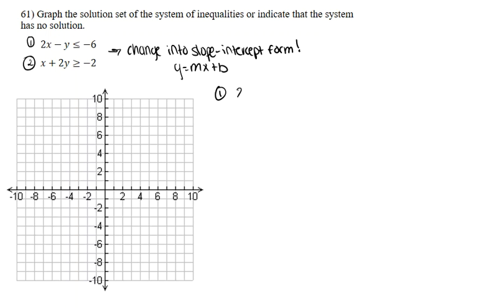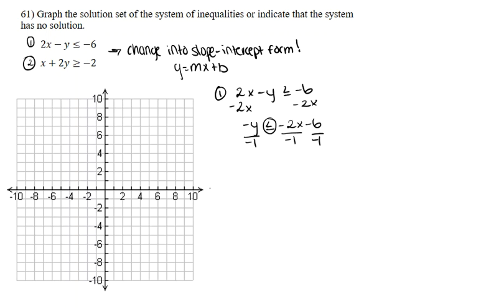Let's start with the first equation: 2x minus y is less than or equal to negative 6. To get this into slope-intercept form, subtract 2x from both sides to isolate y, giving us negative y is less than or equal to negative 2x minus 6. Divide both sides by negative 1 — and whenever you divide an inequality by a negative, you must flip the sign. Flipping it gives us y is greater than or equal to 2x plus 6.